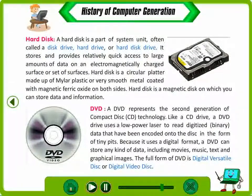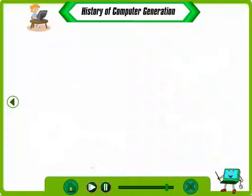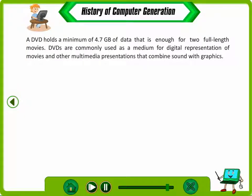A DVD represents the second generation of compact disk technology. Like a CD drive, a DVD drive uses a low-power laser to read digitized binary data encoded onto the disk in the form of tiny bits. Because it uses a digital format, a DVD can store any kind of data including movies, music, text and graphical images. The full form of DVD is Digital Versatile Disk or Digital Video Disk. A DVD holds a minimum of 4.7 GB of data, enough for two full-length movies, and is commonly used for digital representation of movies and multimedia presentations.